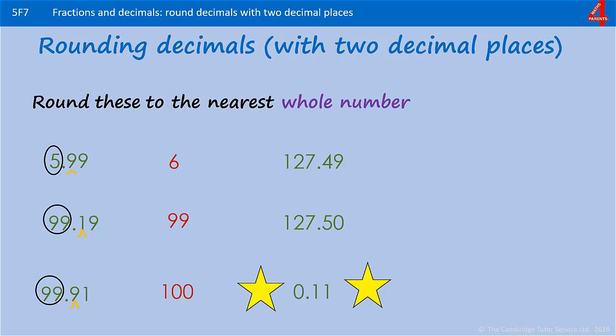127.49. Remember that 0.49 is just less than 0.5, so it's not quite halfway. The whole number is 127. 0.4 means that it stays at 127.